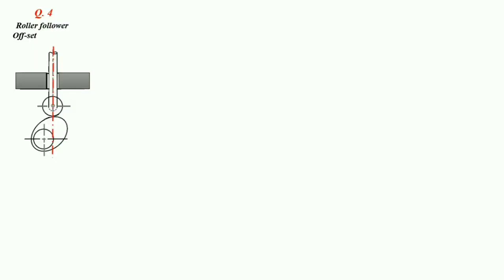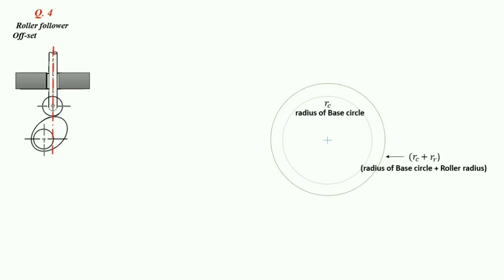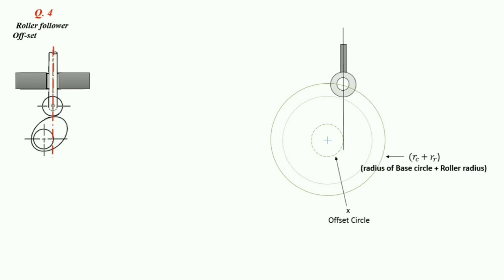Hello friends. The next question is on a cam follower — a roller follower with offset position. First, we will create a base circle with radius RC. After that, we will make a circle with radius equal to base circle radius plus roller radius, so the final radius is RC plus RR. Then this is the offset circle having radius X. Since this is an offset position, we will draw a vertical line tangent to the offset circle and place the roller follower like this.